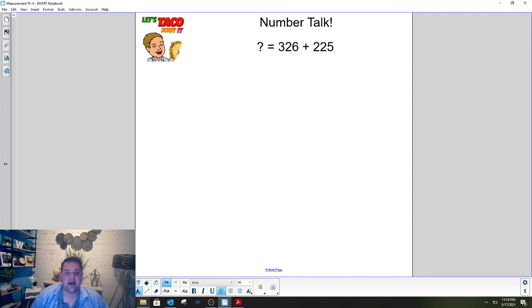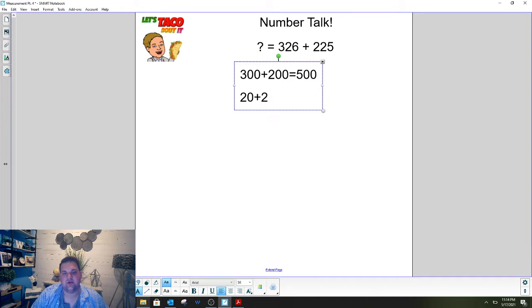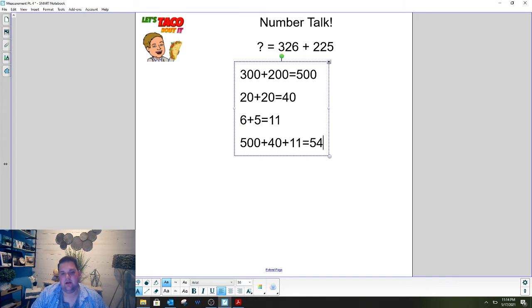All right I'm going to show you how I did it. You might have done it a different way and that is okay. I thought about it thinking with place value. So I did 300 plus 200 and I know that's 500. Then I did 20 plus 20 and I know that's 40. Then I did 6 plus 5 and I know that's 11 and then I added those together. 500 plus 40 plus 11 and I know that is equal to 551. So I used place value, each place value added them together and got my final answer. You might have done it differently but the answer is 551.